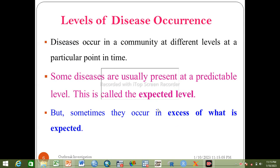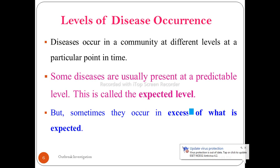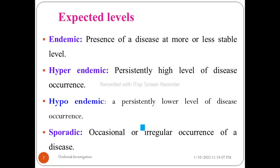If you look at the levels of disease occurrence, disease occurs in the community at different levels at a particular point in time. Some diseases are usually present at a predictable level — this is called the expected level. But sometimes they occur in excess of what is expected.